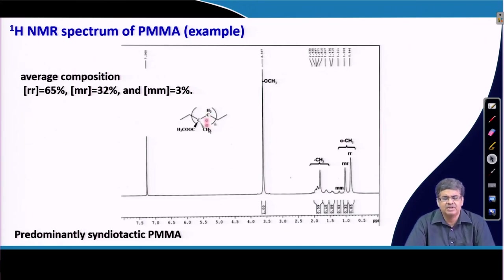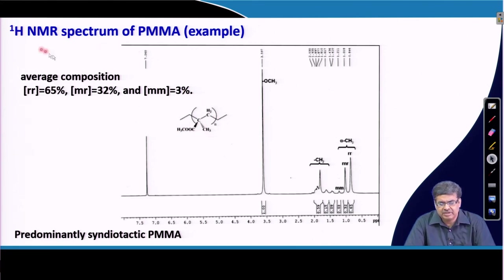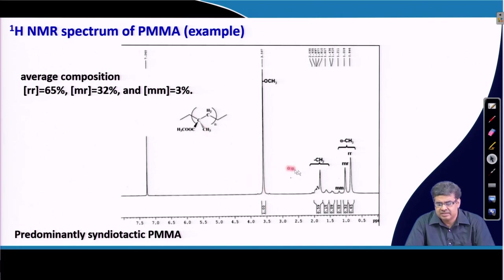This is an example of a PMMA NMR spectrum — a proton NMR spectrum. We concentrate only on the protons. There are three types of protons present in this molecule: 2 protons here, 3 protons here, and another 3 protons. So they will have three different peaks, appearing at three distinct positions.